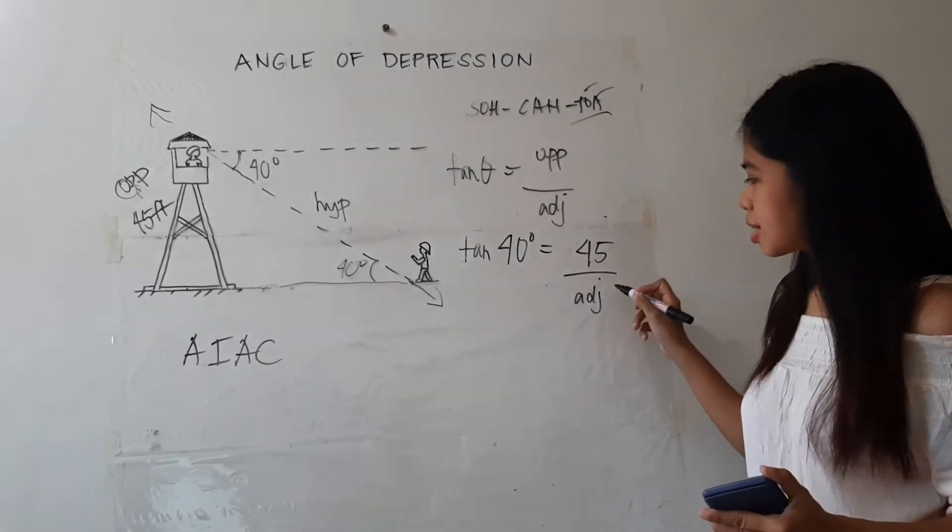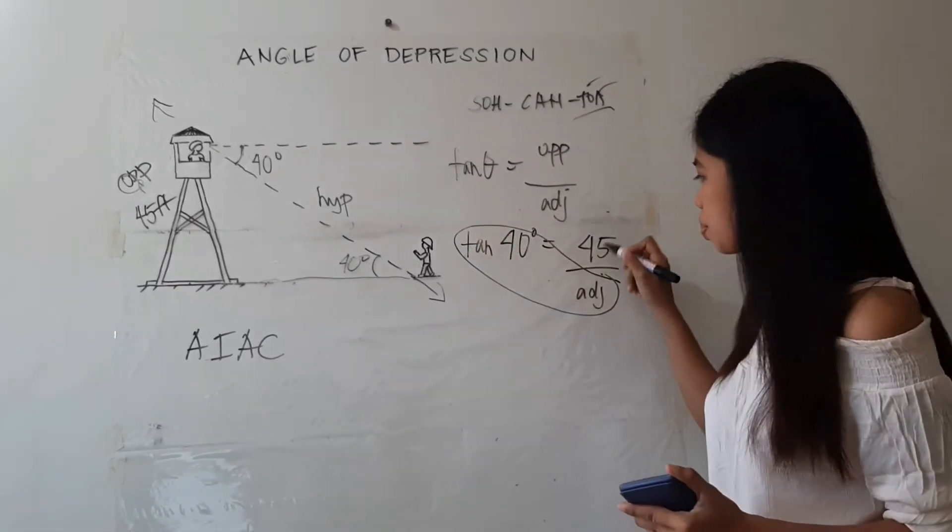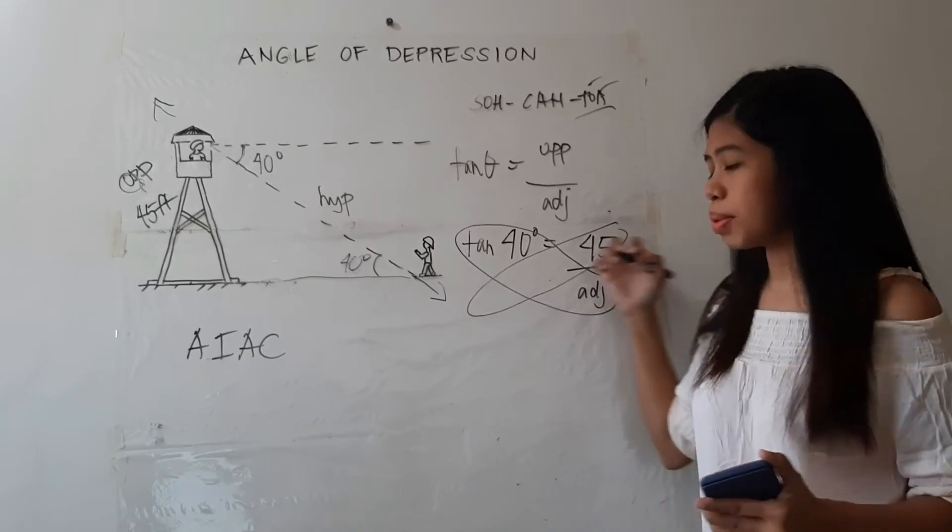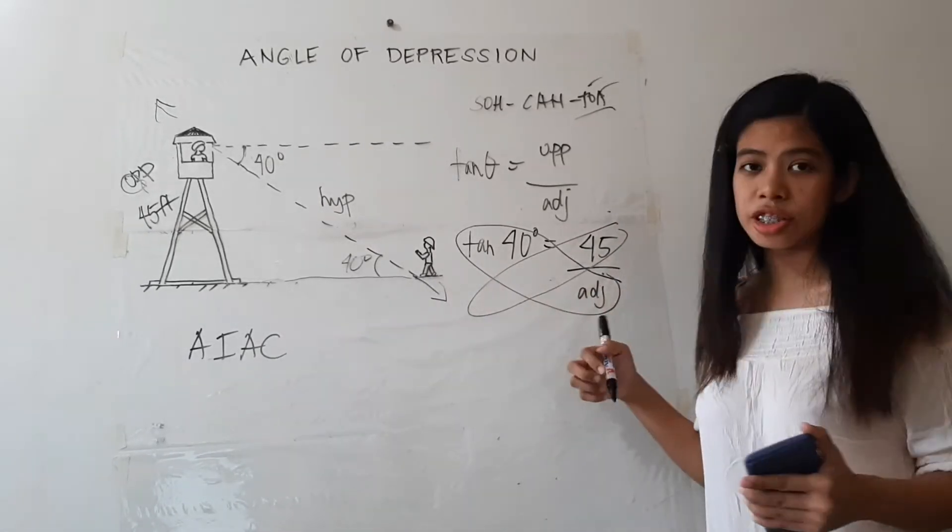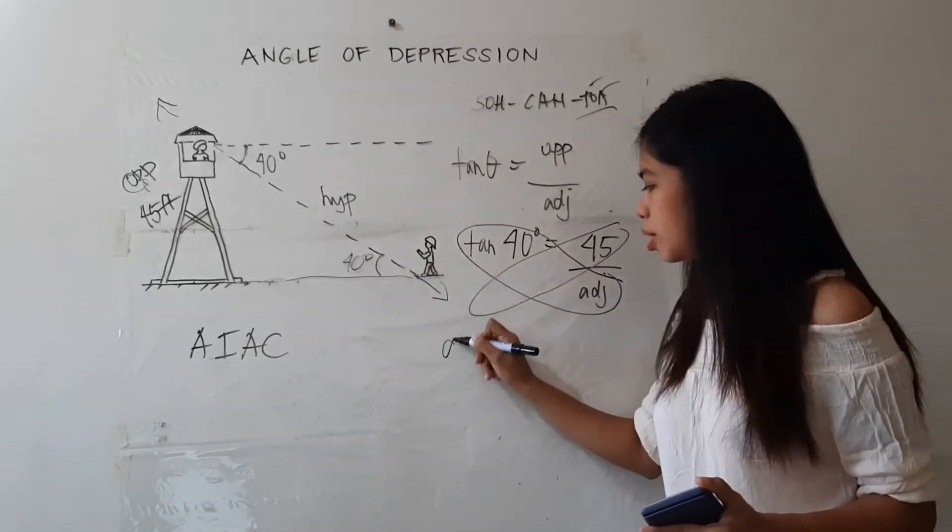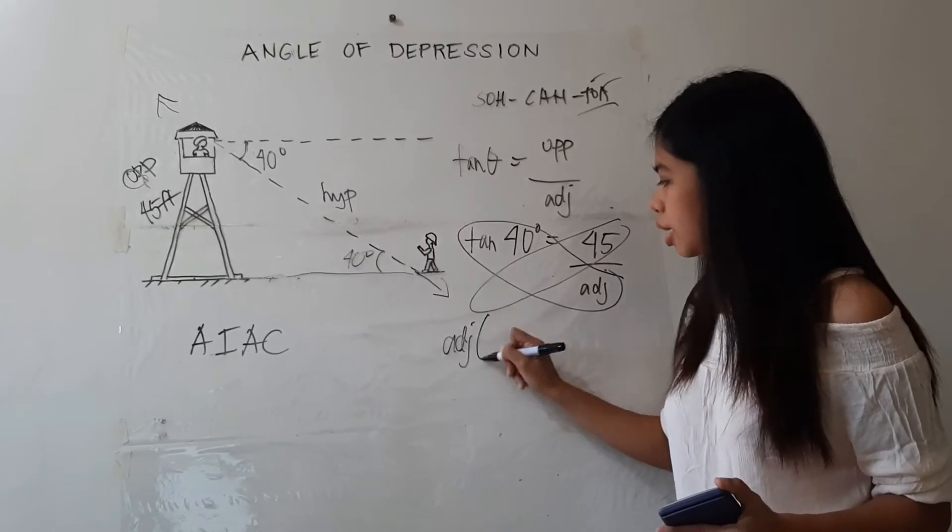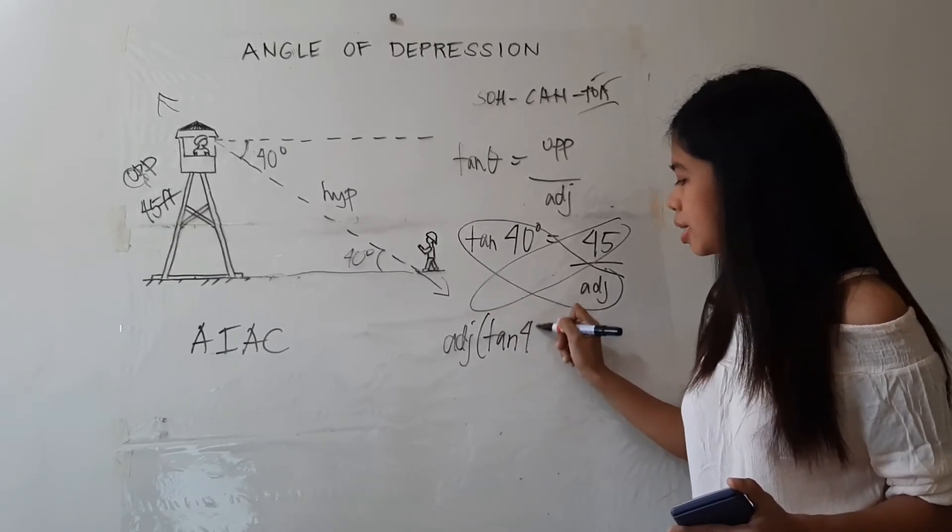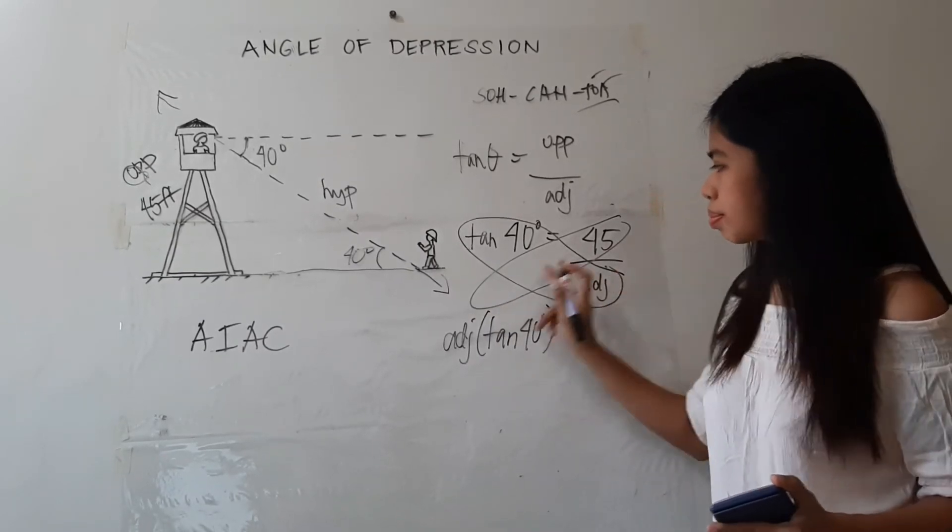So for us to get the adjacent side, once again, we may cross-multiply or multiply both sides by the adjacent. So that would become adjacent times tangent 40 degrees equals 45.